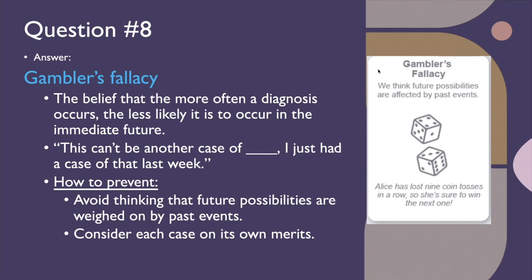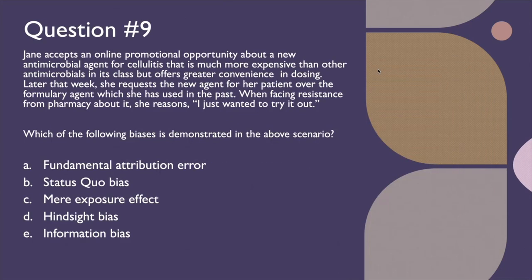Question number nine: Jane accepts an online promotional opportunity about a new antimicrobial agent for cellulitis that is much more expensive than others in its class but offers greater convenience in dosing. Later that week, she requests the new agent for her patient over the formulary agent she has used in the past. When facing resistance from pharmacy, she reasons, 'I just wanted to try it out.' Which bias is demonstrated — fundamental attribution error, status quo bias, mere exposure effect, hindsight bias, or information bias?